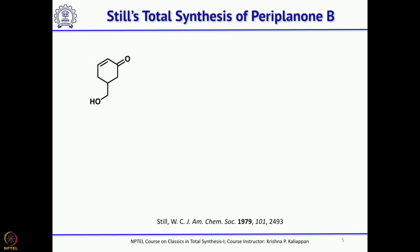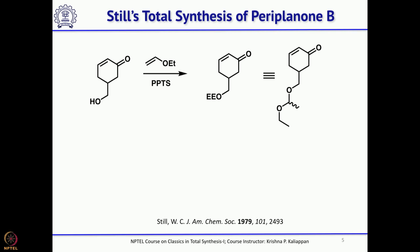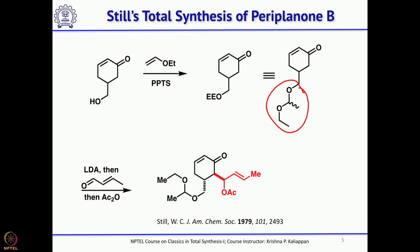Starting with this compound, the primary alcohol was protected with ethyl vinyl ether and then PPTS, protecting this alcohol as ethoxyethyl ether. Normally primary alcohols are protected as TBDPS, TMS, or in older days as THP ether by treating with dihydropyran — this was prior to the TBDPS ether era. Then you generate the anion and quench with an aldehyde, which is then trapped with acetic anhydride to get the corresponding acetate.